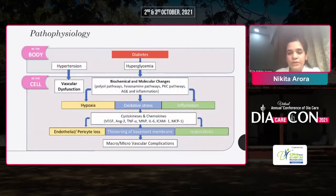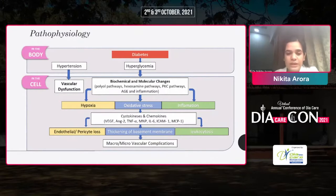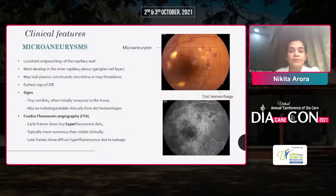In pathophysiology, in diabetes there is hyperglycemia, which leads to biochemical and molecular changes, which further leads to hypoxia, oxidative stress, and inflammation. There is a release of cytokines and chemokines, which leads to endothelial or pericyte loss of the blood vessel, thickening of the basement membrane, and leucocytosis, ultimately leading to macro or micro complications of diabetes.